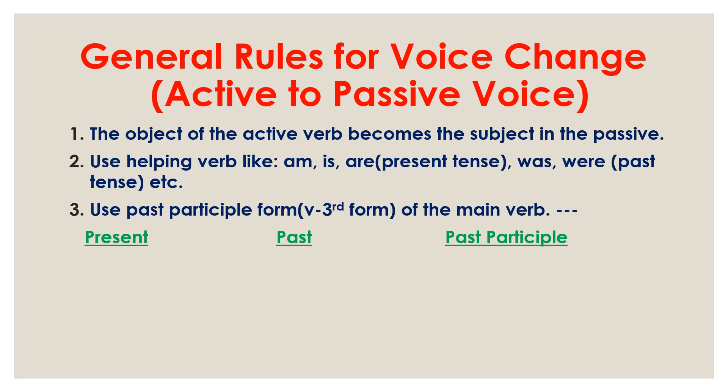A verb has three forms: present form, past form, and past participle form. For example, 'see' — past form 'saw', past participle 'seen'. So we have to use the past participle form of 'see', that is 'seen'. Next, 'call', 'called', 'called' — we need to use the past participle of 'call', that is 'called'.